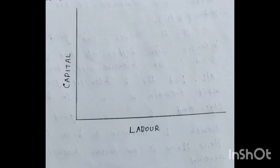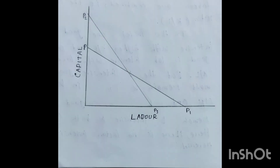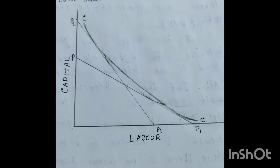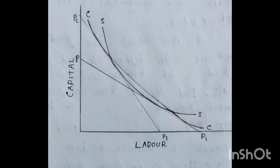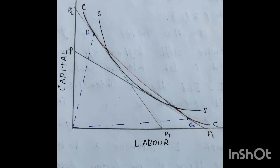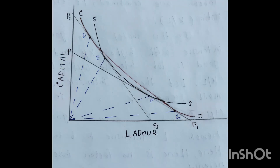Now I will explain this using a graph. We place capital on the Y-axis and labor on the X-axis. We draw the factor price line of country A, labeled PP1, and the factor price line of country B, labeled P2P3. P2P3 is much steeper than PP1 because it is more erect on the Y-axis. We then draw CC, the isoquant for cloth (in red), and SS, the isoquant for steel (in black). CC intersects P2P3 at point D and PP1 at point G. SS intersects P2P3 at point E and PP1 at point F.